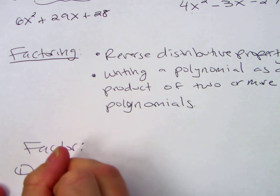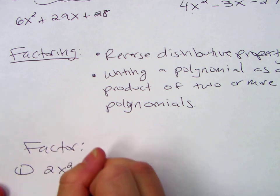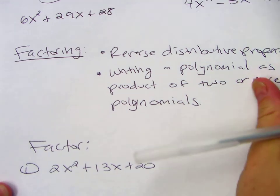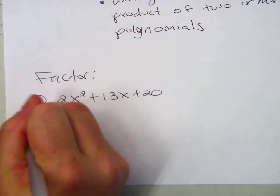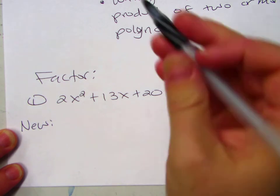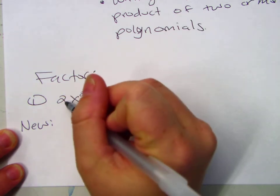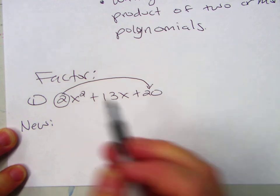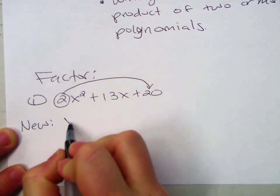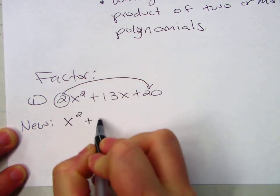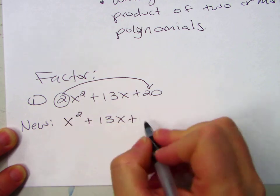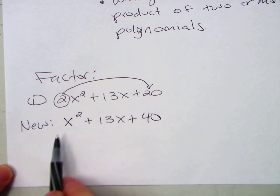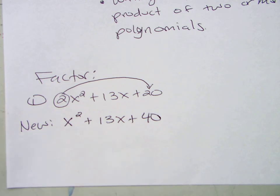Number one. 2x squared plus 13x plus 20. All right. So here's what we're going to do. We're going to create a new trinomial. Something that we can factor. We're going to do that by taking this 2 and we're going to slide it to the end by multiplying. So our new trinomial, they're not the same. They're different. 13x plus, sorry, 2 times 20 is 40. Now this is something we know how to factor.